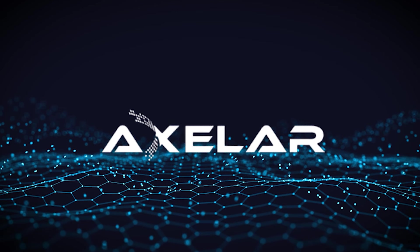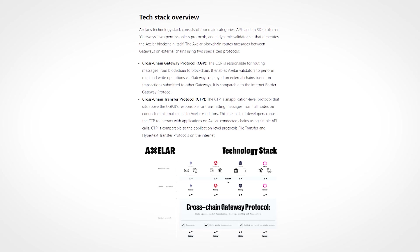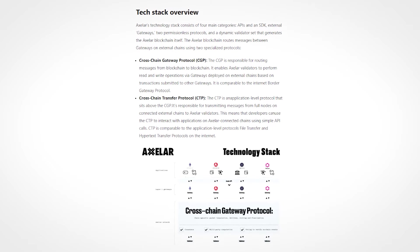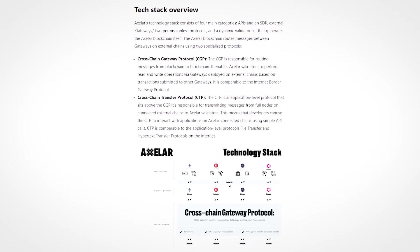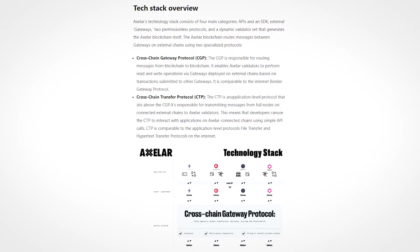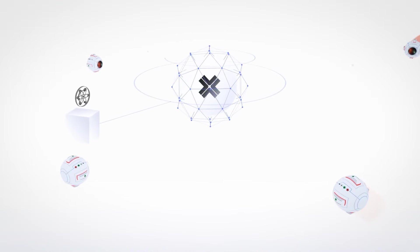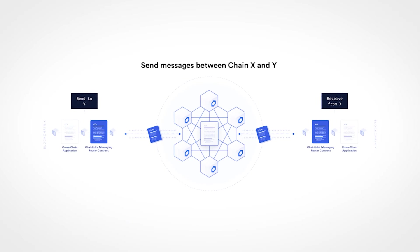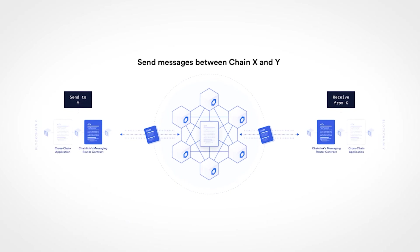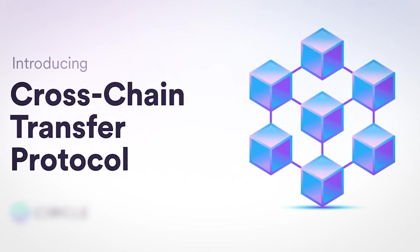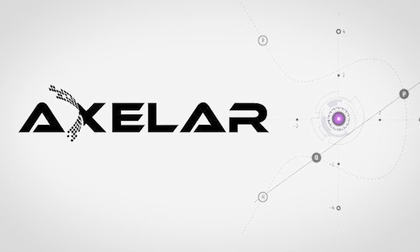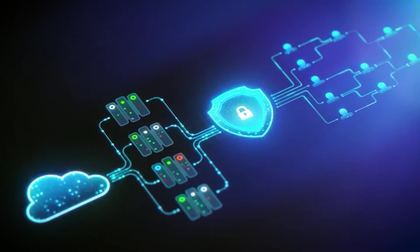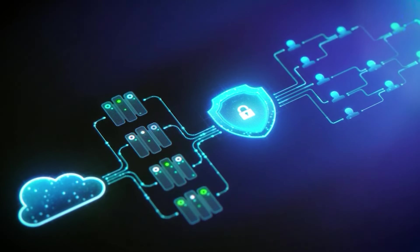So how does Axelar work under the hood? Axelar consists of four main components: a decentralized network or blockchain, a software development kit and APIs, a set of gateway smart contracts, and two permissionless protocols. The Axelar blockchain transmits messages between gateways on external chains using two permissionless protocols: the cross-chain gateway protocol or CGP, and the cross-chain transfer protocol known as CTP. These protocols form the backbone of Axelar's cross-chain capabilities, ensuring the secure and efficient flow of information and assets across different blockchain ecosystems.